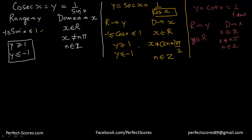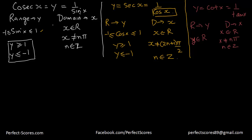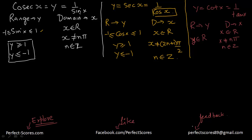So these are the domains and ranges of all six functions: sin x, cos x, tangent x, cosecant x, secant x, and cotangent x. You can explore more at perfect-scores.com and find us on facebook.com/perfectscores. In the next video, we're going to be talking about the range of these functions in their particular quadrants. Thank you very much for watching.